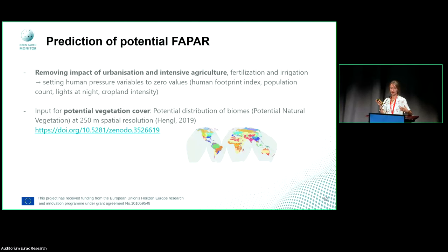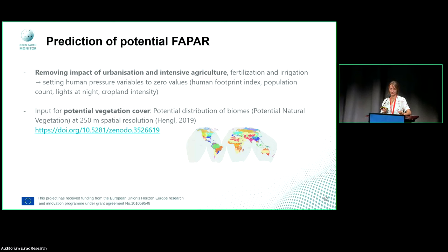This model to estimate actual FAPAR was then used to predict the potential FAPAR, by removing the impact of urbanization and intensive agriculture. We did this by setting the human pressure variables — the human footprint index, population count, night lights, and cropland intensity — to zero values, to see what the FAPAR would be at the same location. For the vegetation cover, we used the potential biome distribution to estimate which biome would naturally occur at that location.